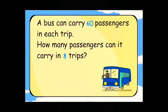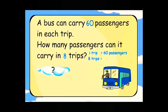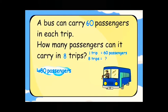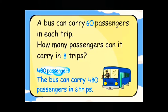A bus can carry sixty passengers in each trip. How many passengers can it carry in eight trips? One trip is equal to sixty passengers. Eight trips is equal to four hundred and eighty passengers — sixty into eight, that is four hundred and eighty. The bus can carry four hundred and eighty passengers in eight trips.